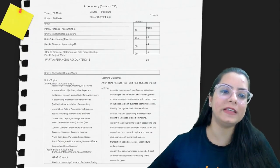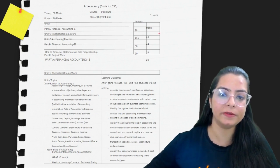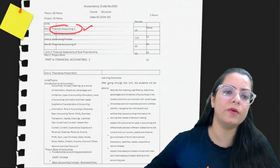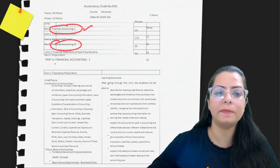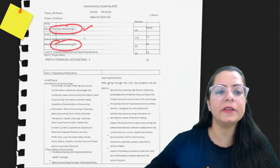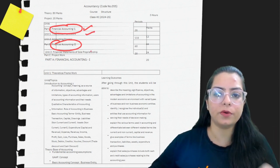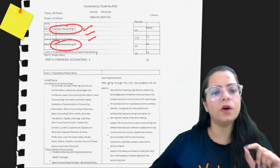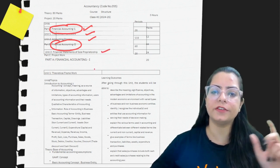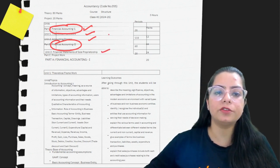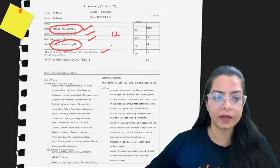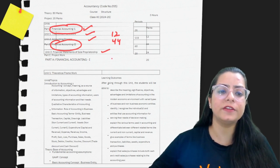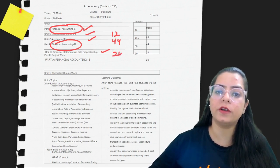Let me tell you the CBSE syllabus. Your CBSE Class 11 accounting syllabus will be divided into two parts: Financial Accounting Part 1 and Financial Accounting Part 2. You will have three units: the first unit is Theoretical Framework, the second is Accounting Process, and the third is Financial Statements of Sole Proprietorship. Theoretical Framework and Accounting Process together are 44 marks, and Financial Statements of Sole Proprietor is 24 marks.